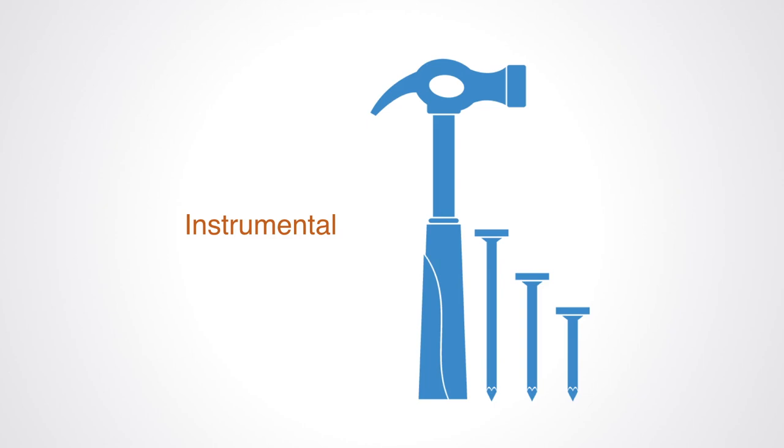Utility is a measure of extrinsic value. Utility is instrumental, like a tool or an instrument. We use it for what it can achieve. We don't care about the system itself.